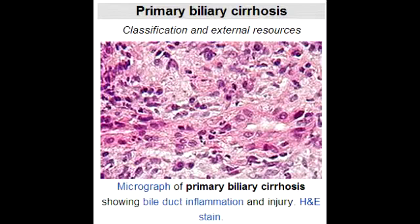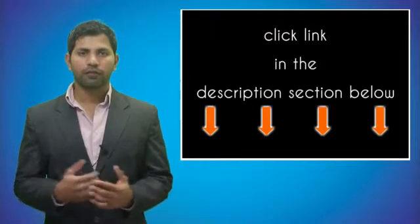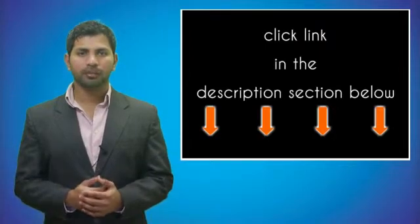What lab or diagnostic finding is observed with primary biliary cirrhosis? In primary biliary cirrhosis, you see antimitochondrial antibodies, also known as AMAs.